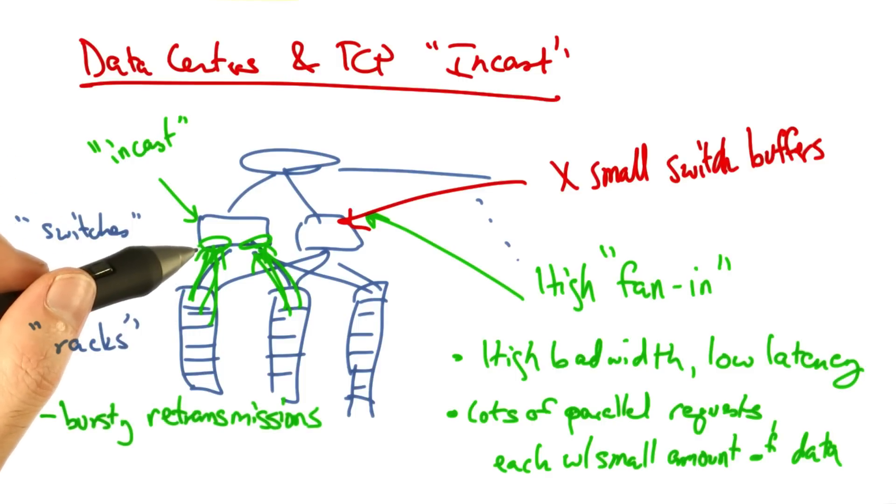The filling up of the buffers here at the switches result in bursty retransmissions that overfill the switch buffers, and these bursty retransmissions are caused by TCP timeouts.